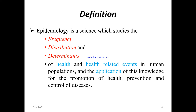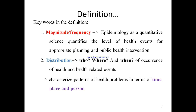Let us look at some important variables mentioned under the definition of epidemiology. The first one is magnitude or frequency. Epidemiology, as a quantitative science, quantifies the level of health events for appropriate planning and public health intervention. Based on numbers or figures, we plan or intervene in the existing situation.